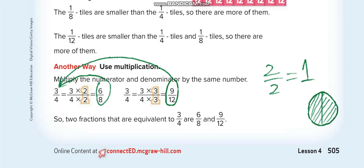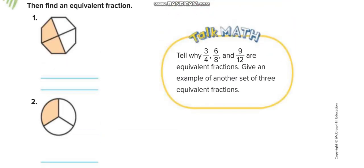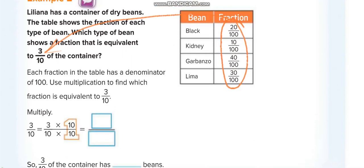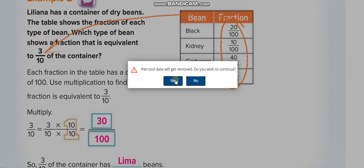Here they're asking: from these fractions, which one is equivalent to three over ten? What can you multiply here to get any of these? If you multiply by ten: three times ten is thirty, and ten times ten is one hundred. So the equivalent fraction for three over ten is thirty over one hundred. That's the matching answer.